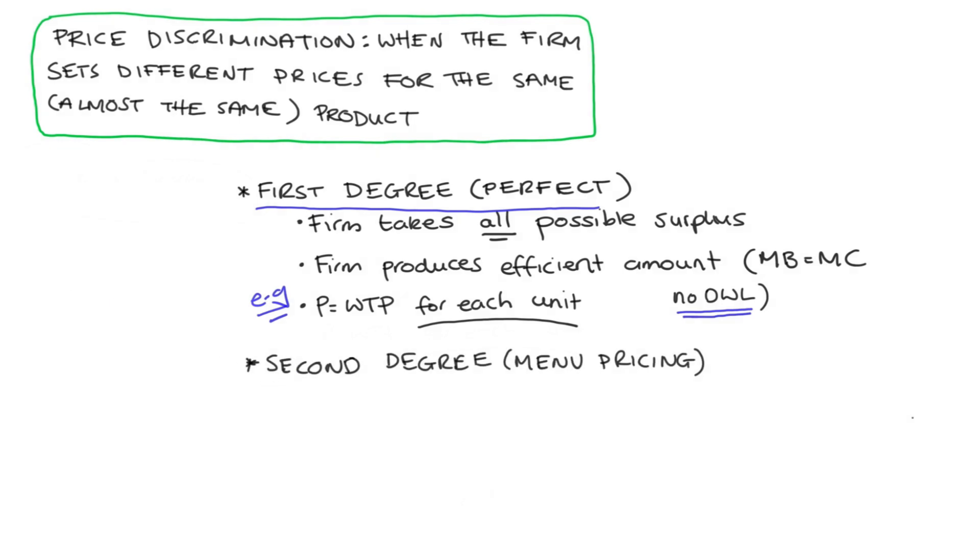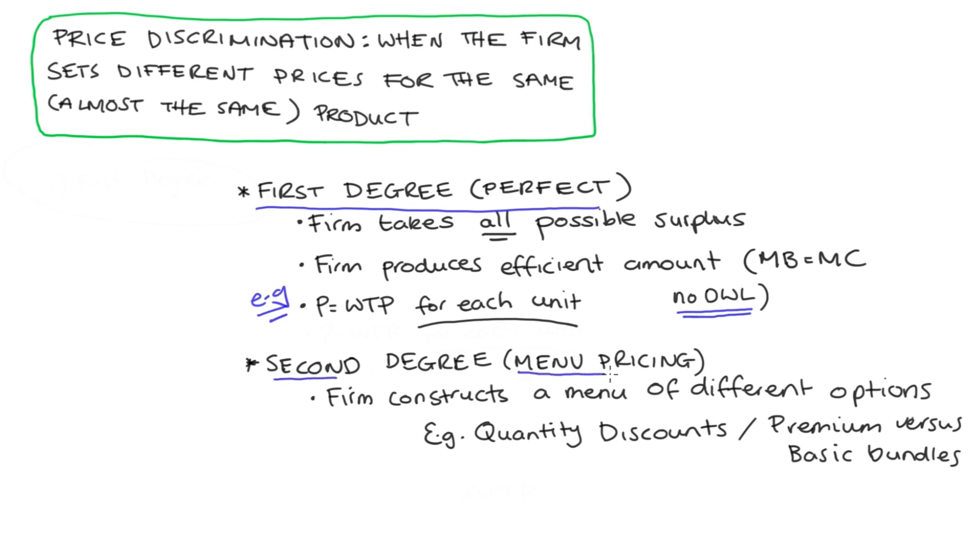Now, second degree price discrimination is when the firm constructs a menu of options which their consumers can choose from. These options will differ from one another in various respects and they will be designed such that those consumers with a higher willingness to pay self-select into the more expensive option and those with a lower willingness to pay get the cheaper option. So as an example, the firm might offer quantity discounts where if a consumer buys more, the price per unit is reduced. Another possibility might be offering a premium versus a basic bundle where the premium version includes some perks and the basic bundle is made unattractive in various ways.